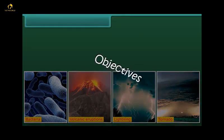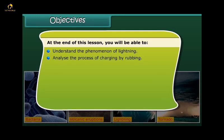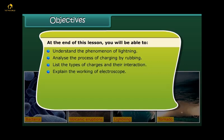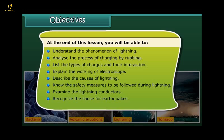Objectives: At the end of this lesson you will be able to understand the phenomenon of lightning, analyze the process of charging by rubbing, list the types of charges and their interaction, explain the working of electroscope, describe the causes of lightning, know the safety measures to be followed during lightning, examine the lightning conductors, recognize the cause for earthquakes, and identify precautions to be taken during earthquakes.